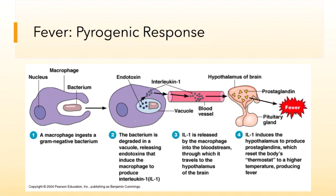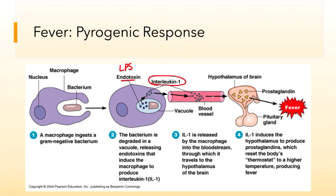The example we're going to look at is the pyrogenic response in response to a gram-negative bacteria. When a macrophage phagocytizes a gram-negative bacterial cell, those bacteria have endotoxins — remember LPS, the lipopolysaccharide found in the outer membrane of gram-negative cells. The LPS initiates macrophages to produce a cytokine called interleukin-1. IL-1 is excreted into the bloodstream, travels through blood vessels to reach the hypothalamus. The hypothalamus recognizes there's a lot of gram-negative bacteria out there and raises the body temperature to decrease bacterial activity and enhance the body's own activity, producing prostaglandins that drive the pyrogenic response.